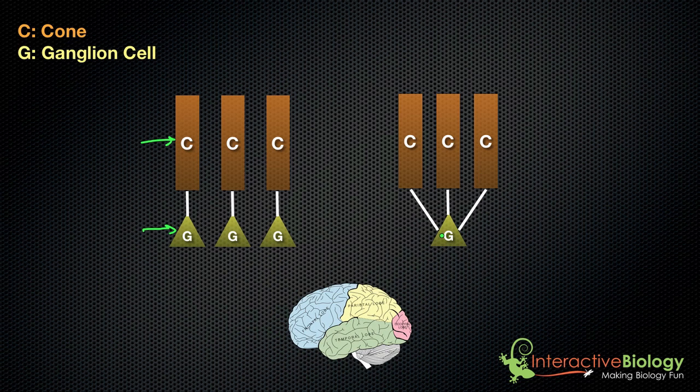Now from the ganglion cell, we said that the ganglion cells have axons and they send signals to the brain. So I'm just going to draw an arrow going to the brain from each ganglion cell, and I'm going to draw an arrow going to the brain from this ganglion cell over here also.